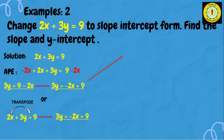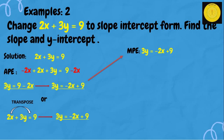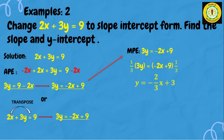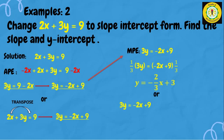We're not yet done. Since our answer is 3y equals negative 2x plus 9, we need y to have no coefficient. Using the multiplication property of equality, we multiply both sides by one-third to eliminate the 3. So one-third times 3y equals negative 2x plus 9 times one-third, giving us y equals negative two-thirds x plus 3. Alternatively, we can divide both sides by 3 to get the same answer.